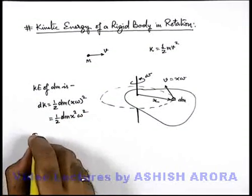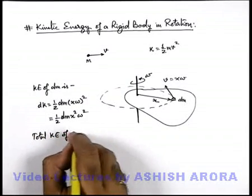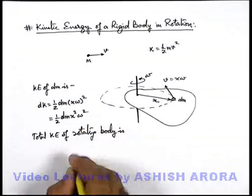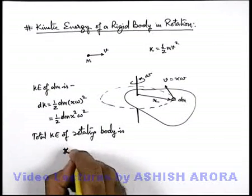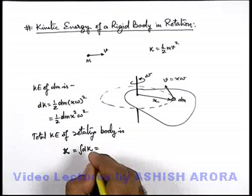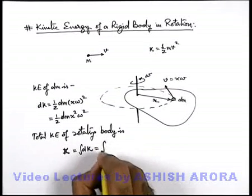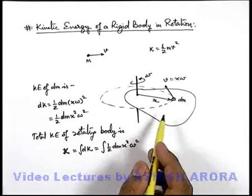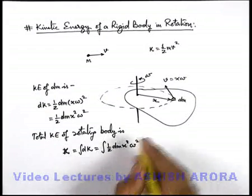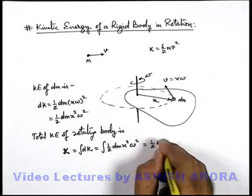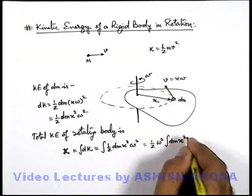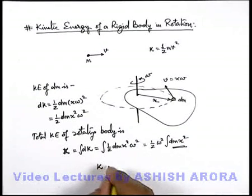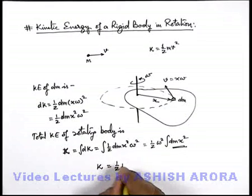So we can write the total kinetic energy of a rotating body. It can be given as total kinetic energy equal to integration of dK, that will be equal to integration of half dm x squared omega squared. As we know for all particles of the body omega will be a constant, so this half and omega squared can be taken out of the sign of integration, giving half omega squared times integration of dm x squared. This is the moment of inertia of the body, which we have already studied, so we can write the kinetic energy of the body as half I omega squared.